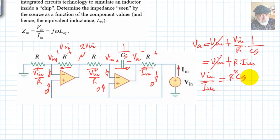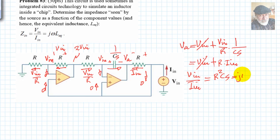But s is jω, so this is just jω, R squared C, and that means that the equivalent inductance is just this term, R squared C, and that was the solution to problem number three. Thank you very much.